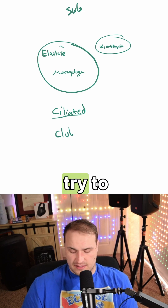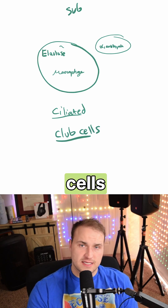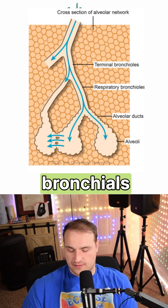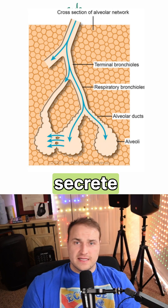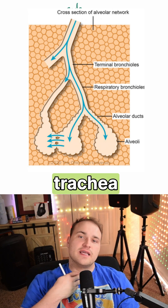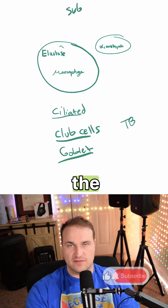What about club cells? They're going to try to get you with that one too. Club cells are found in the terminal bronchioles. They secrete mucin. They're located in the trachea and bronchi, and they're absent from the alveoli.